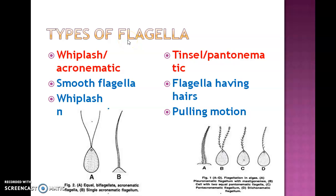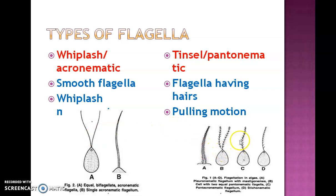The second parameter is the nature of flagella. Flagella is a hair-like structure which helps the movement of algae. It is mainly of two different types: whiplash or acropneumatic type, and tinsel or pantonematic type. Whiplash type flagella is smooth without hairs, while tinsel type has hairs on it. Whiplash flagella moves like sea waves while tinsel type shows a pulling motion.